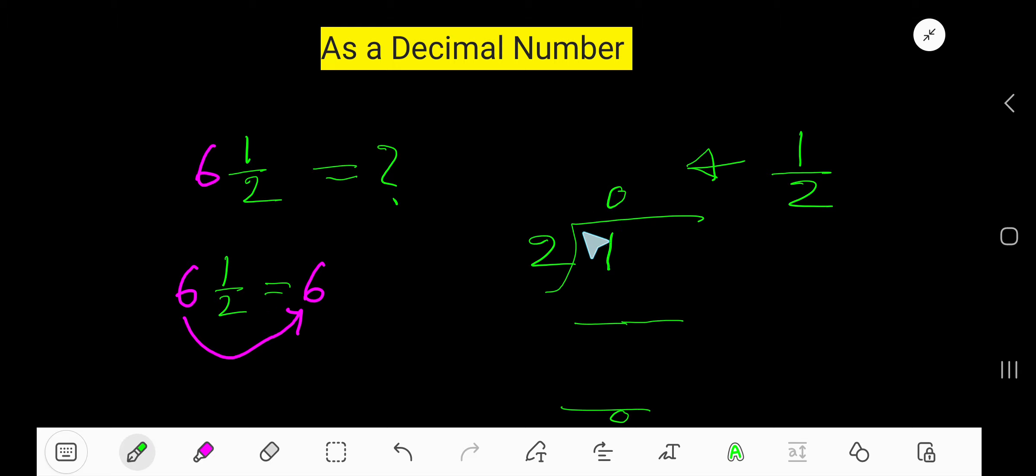one how many times? Zero times. Zero times two is zero. If you subtract, you're getting one. To continue this process, take a decimal and you can take zero. Bring down the first zero. Before the zero there is